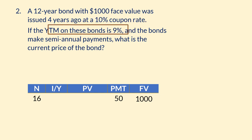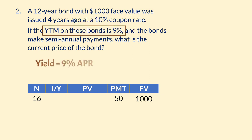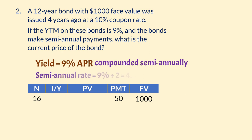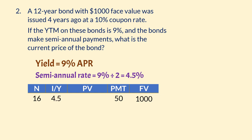The 9% yield quoted here is the nominal rate, or APR. That is, it is compounded semi-annually, just like the payments that are made semi-annually. The semi-annual rate will thus be 9% divided by 2, which gives 4.5%. So I/Y is 4.5.